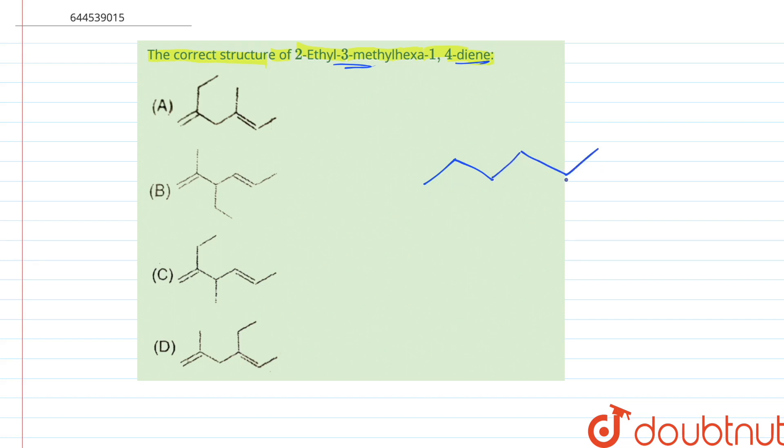So there are 6 carbons in this: 1, 2, 3, 4, 5, and 6, and there is 1 and 4 there is diene. So this is the alkene carbon chain which has 1, 2, 3 and 4th carbon has an alkene again.